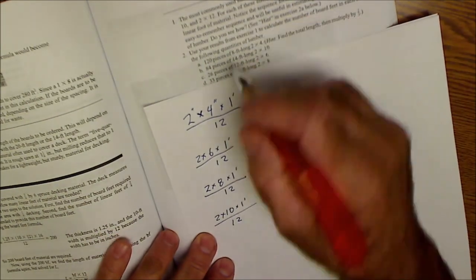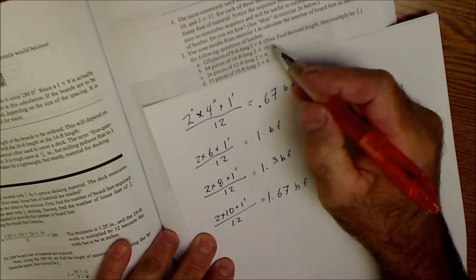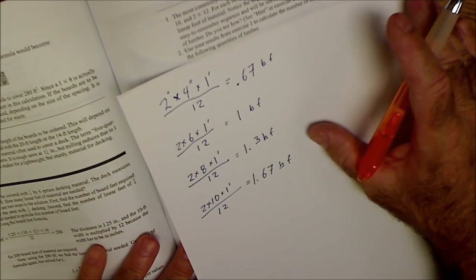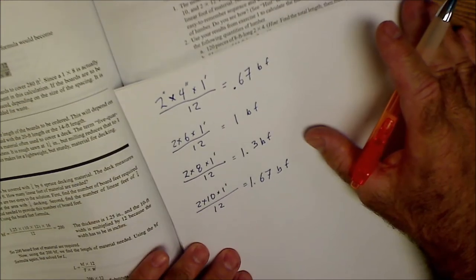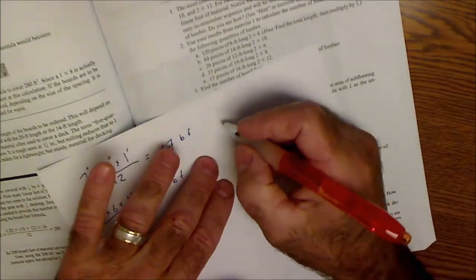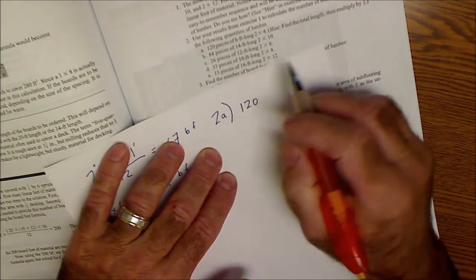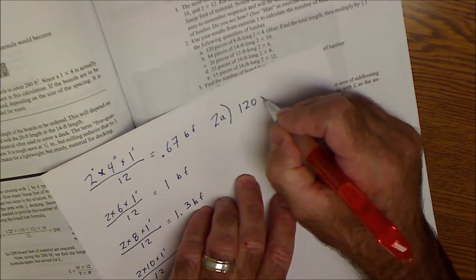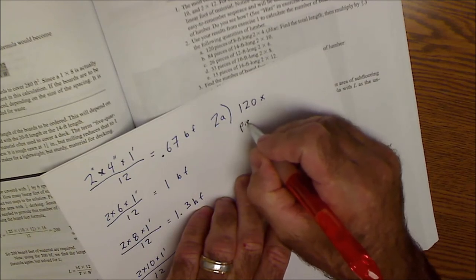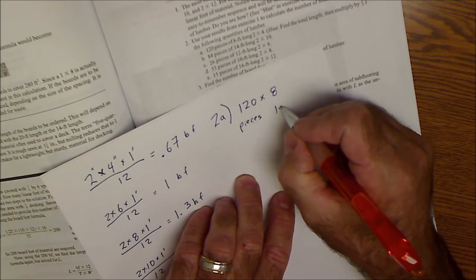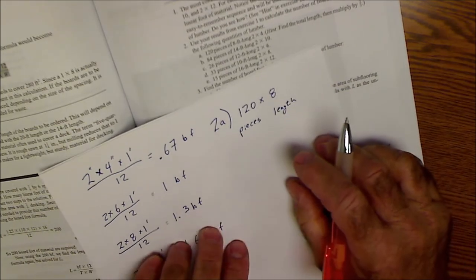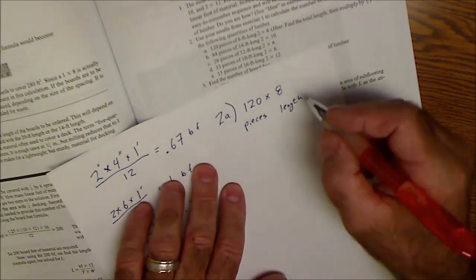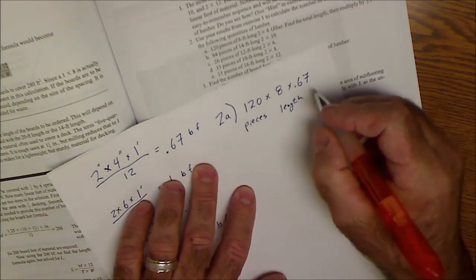Then down on number 2, I didn't do all of them, but I'll just do a couple of these so you get the idea. Use your results from exercise 1 to calculate the board feet in the following. 120 pieces. So this is going to be problem 2A. I have 120 boards, 8 foot long 2x4s. So what I'm going to do here is I'm going to multiply 120 pieces times the 8 foot length. And they're 2x4s. So I'm going to go up here to my measurement of 2x4s. So 1 linear foot is 0.67 board feet.